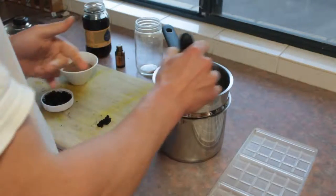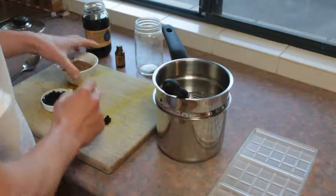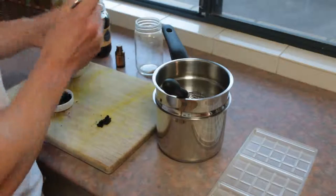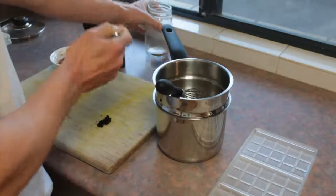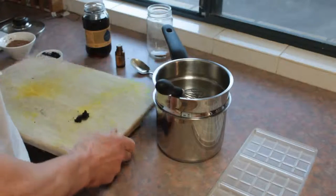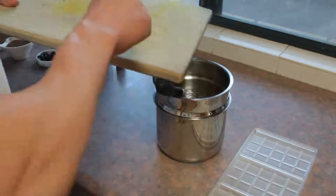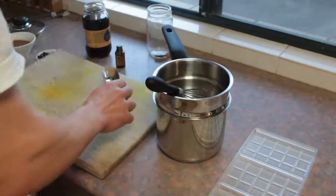So the cacao butter is melted. I've got the Ceylon cinnamon to add in, just a pinch. Just gives it that diversity in the flavor. Add the Madagascan vanilla bean. I just scraped two vanilla beans for that.